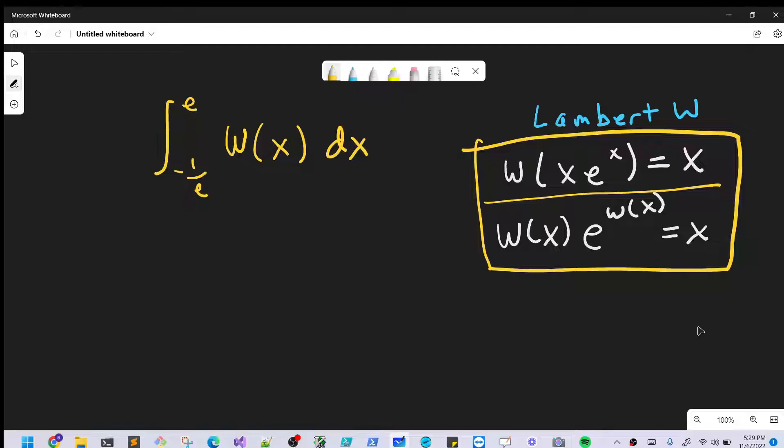Hey, so we have a really interesting problem on the board. We have the integral from e to minus 1 over e of the Lambert W function dx.